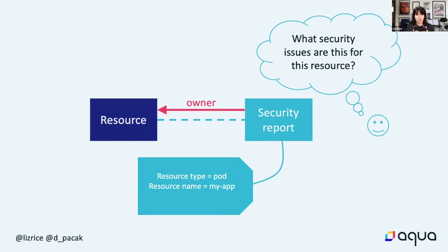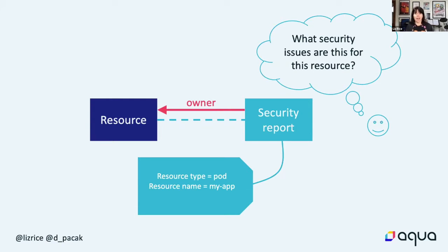Deciding to use this owner reference approach actually settled another design decision for us. We've been going back and forth on whether it would be useful to maintain historical security reports. By using this owner reference, we know we're going to be cleaning up security resources when the associated resource is deleted, so we can't hold on to historical information. That makes a lot of sense because Kubernetes isn't intended to hold a historical database of things that have happened in the cluster in the past, so there's no reason it should hold on to security reports from the past either. The alternative is to log the information and store it elsewhere outside of the cluster.